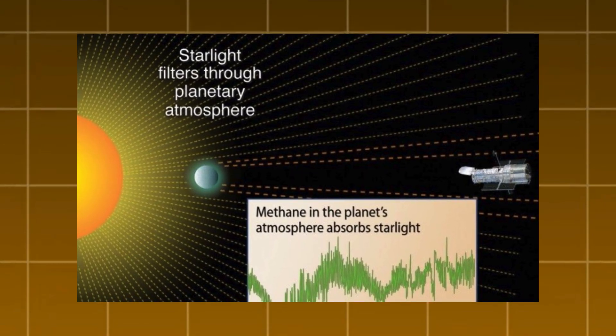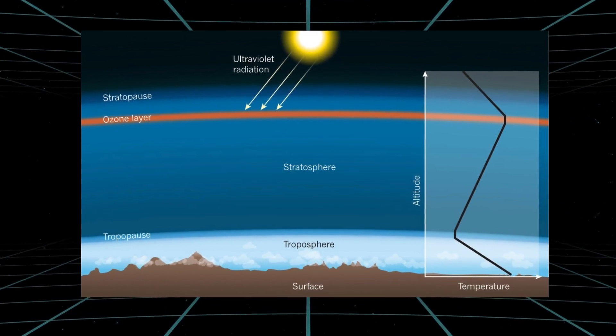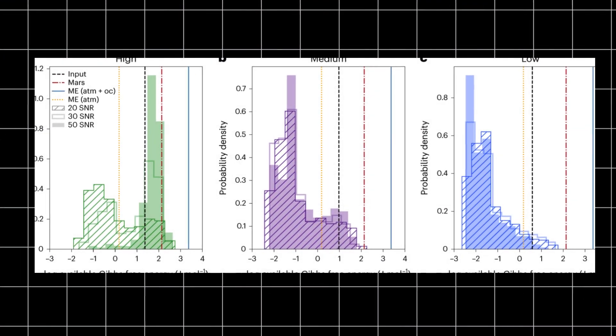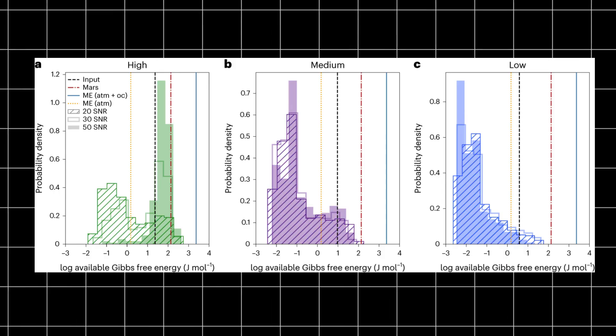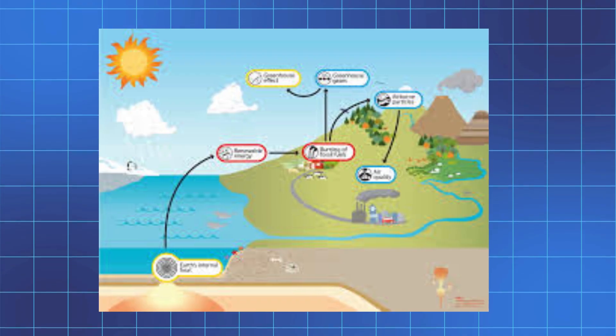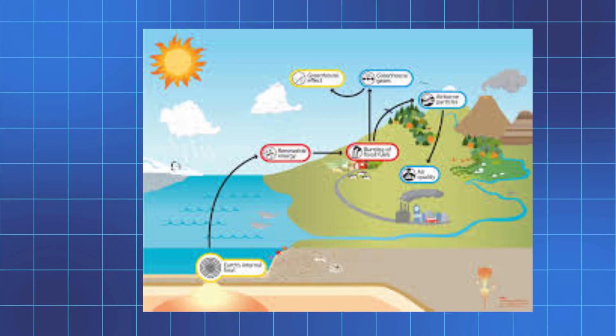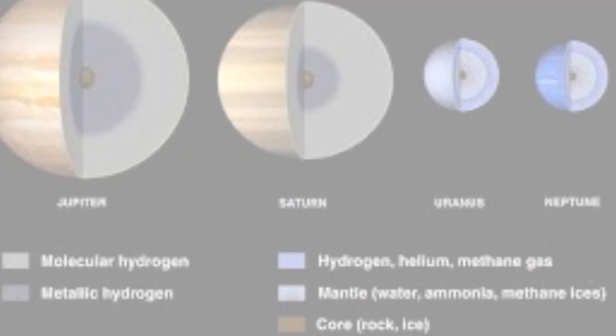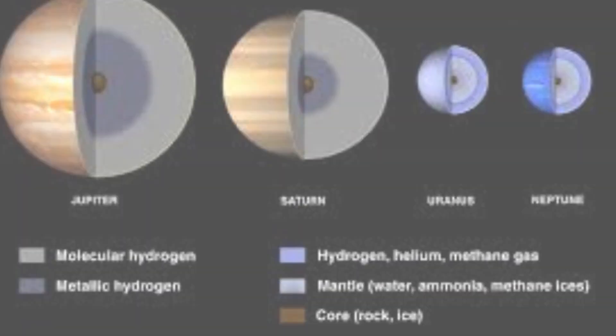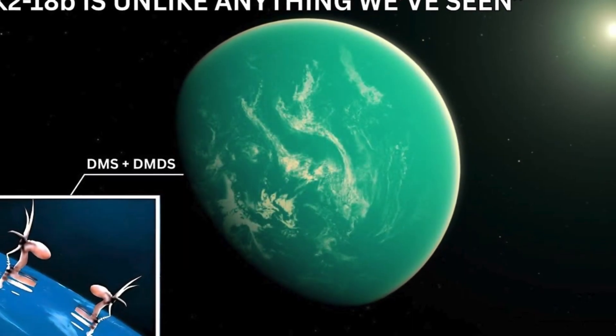Webb's spectroscopic precision has exposed chemical pairings that defy stability. On K2-18b, potential biosignatures coexist with methane and carbon dioxide in states of prolonged disequilibrium, implying constant renewal. Volcanism, photochemistry, or deeper cycles could sustain them, but their persistence under moderate stellar input points to internal drivers amplifying activity.